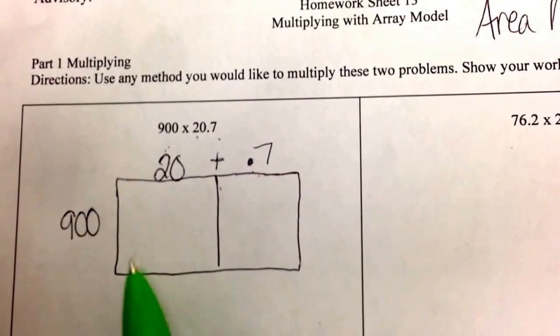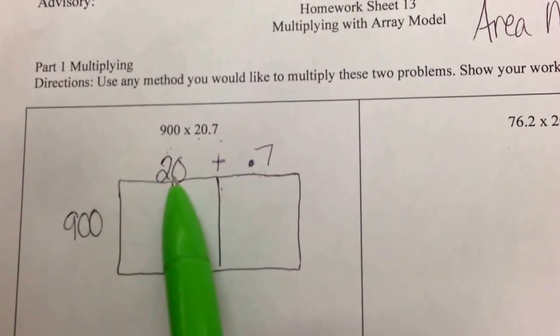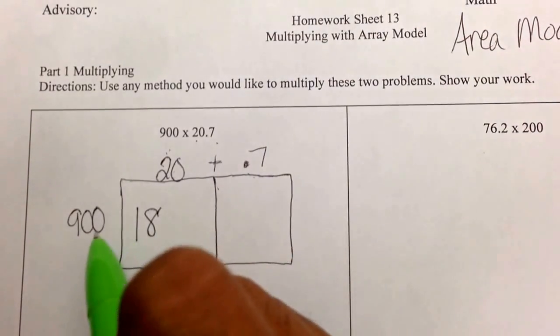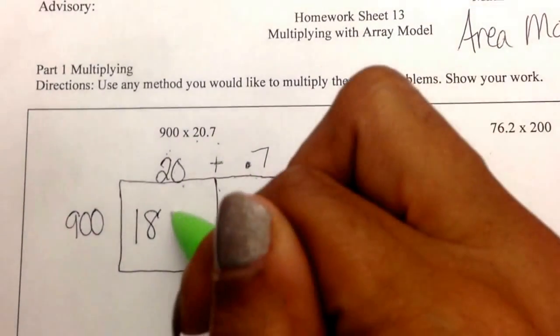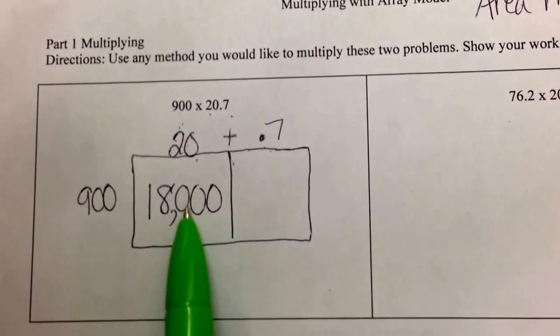Now watch how easy it is for me to multiply. I'm going to pay attention to only my two numbers in the front. 9 times 2 is 18, and then I can count the zeros, 1, 2, and 3 behind it. So I get 18,000. That's what I mean by friendly.